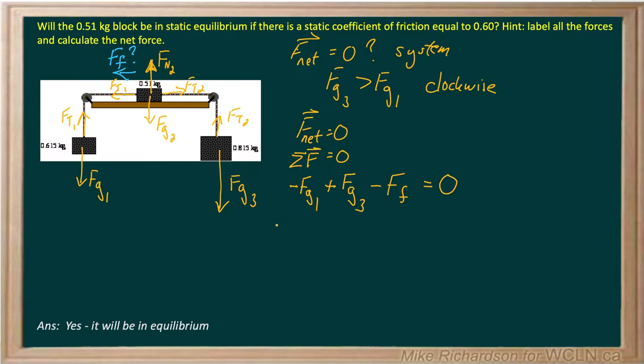Fg1, negative mass times acceleration due to gravity plus Fg3 is mass times 9.8 minus force of friction. All that equals zero. And when I work this through, I get a friction force of 1.96 newtons.